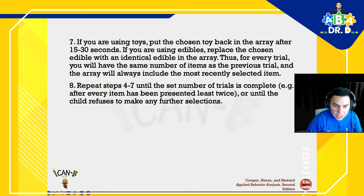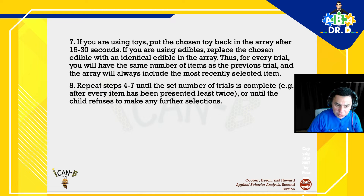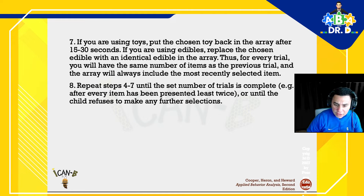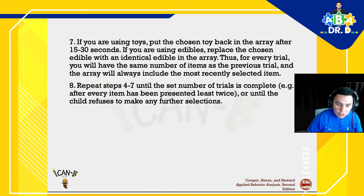Step five: allow the child to consume the edible or play with the toy, and block access to the remaining stimuli during this interim. While the child is consuming or playing, replace the unselected items with new items and choose a new location for the chosen item in the array — moving it prevents you from detecting a side bias where the child always picks from one particular side.